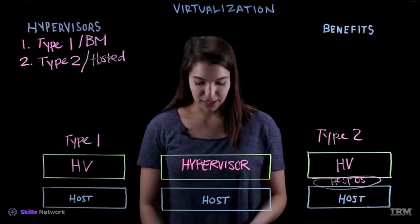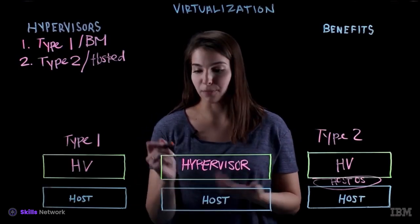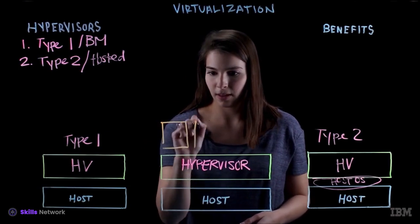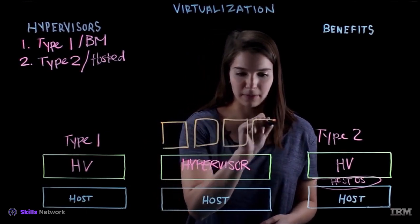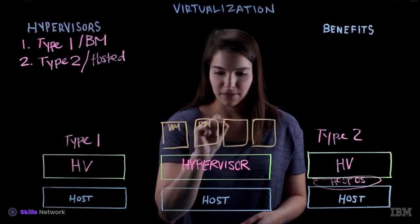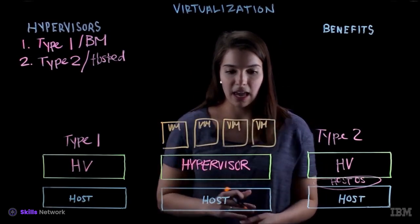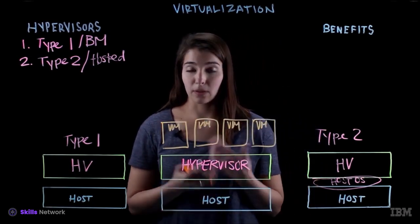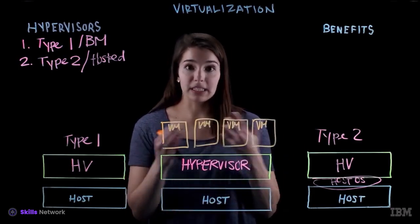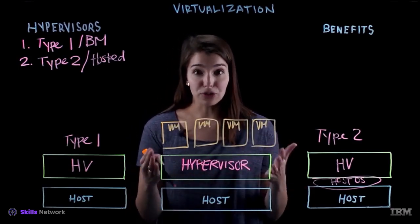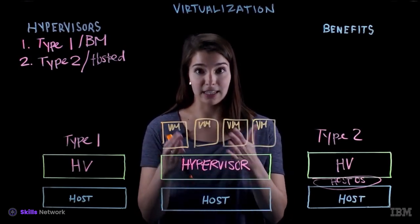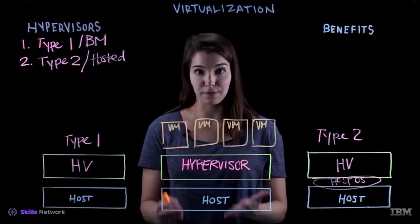So once you have your hypervisor installed, you can build virtual environments, or virtual machines, or simply put, VMs. What makes a VM a VM? A VM is simply a software-based computer. They run like a physical computer — they have an operating system and applications, and they're completely independent of one another. But you can run multiple of them on a hypervisor, and the hypervisor manages the resources that are allocated to these virtual environments from the physical server.